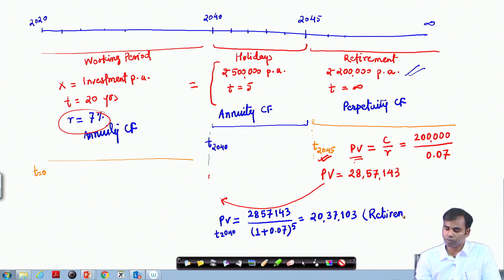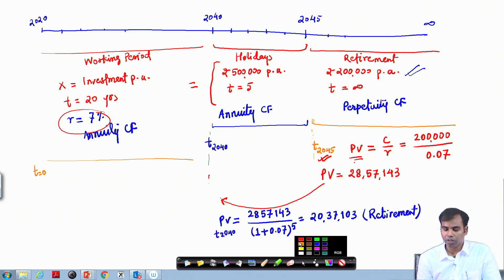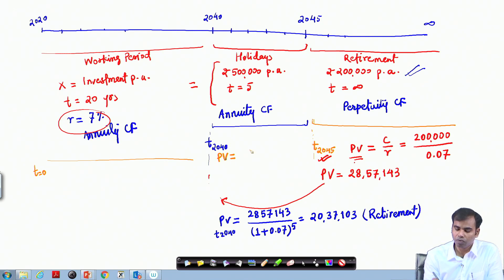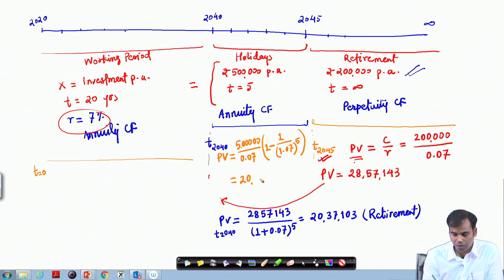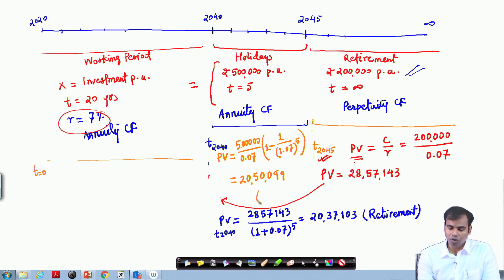Similarly, we calculate the present value of the holiday fund. The holiday fund is the present value of an annuity cash flow of 5 lakh rupees: C by R, which is 5 lakh by 7 percent, multiplied by 1 minus 1 divided by 1.07 to the power 5. The calculated value is 20,50,099. This is the holiday fund.